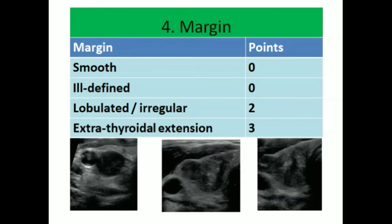The fourth feature is margin. If the margin is smooth or ill-defined, the points awarded will be zero. If the margins are lobulated or irregular, it will have two points. If the margins show extrathyroidal extension, the nodule will be awarded three points.